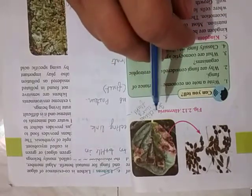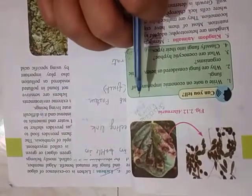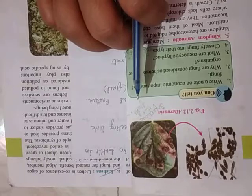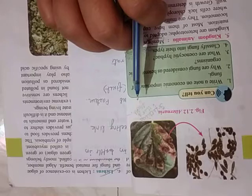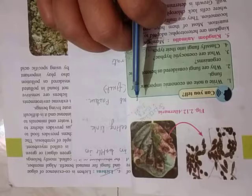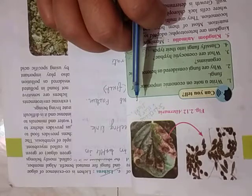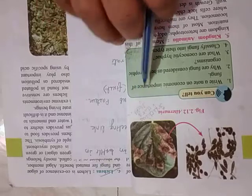This is how the fungi group has been classified. If we talk about this chapter, Kingdom Animalia and Kingdom Plantae are not explained in detail because these are separate chapters. Only three kingdoms are explained well: Kingdom Monera, Kingdom Protista, and Kingdom Fungi. If there are questions, mainly they come from these three kingdoms.